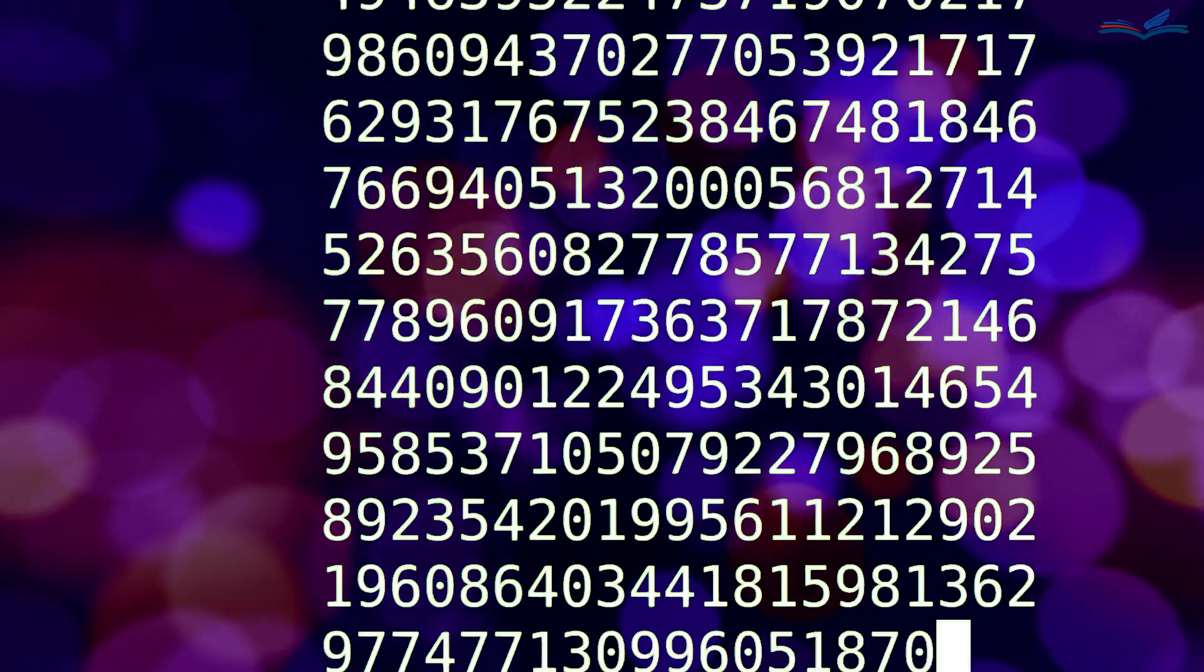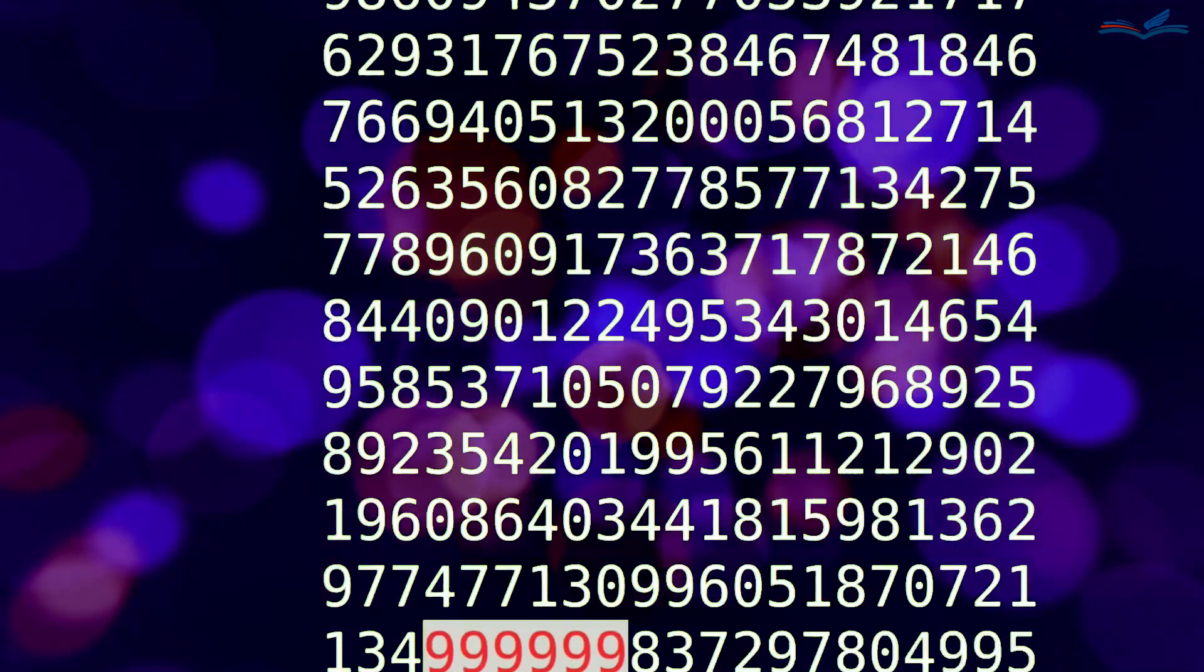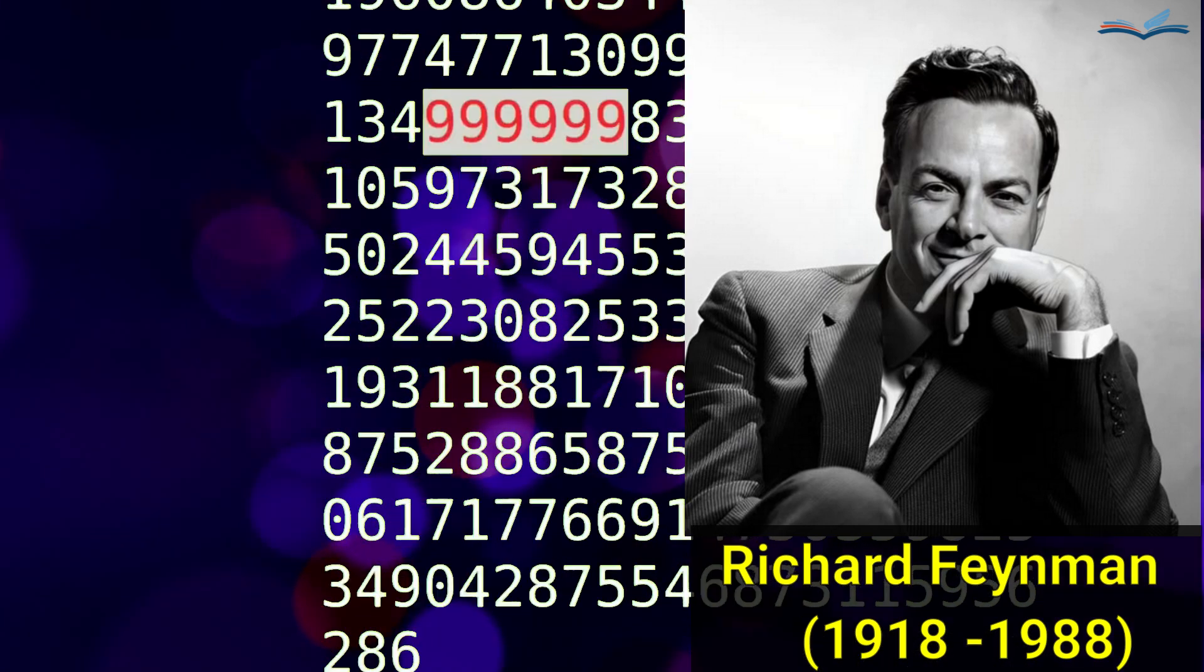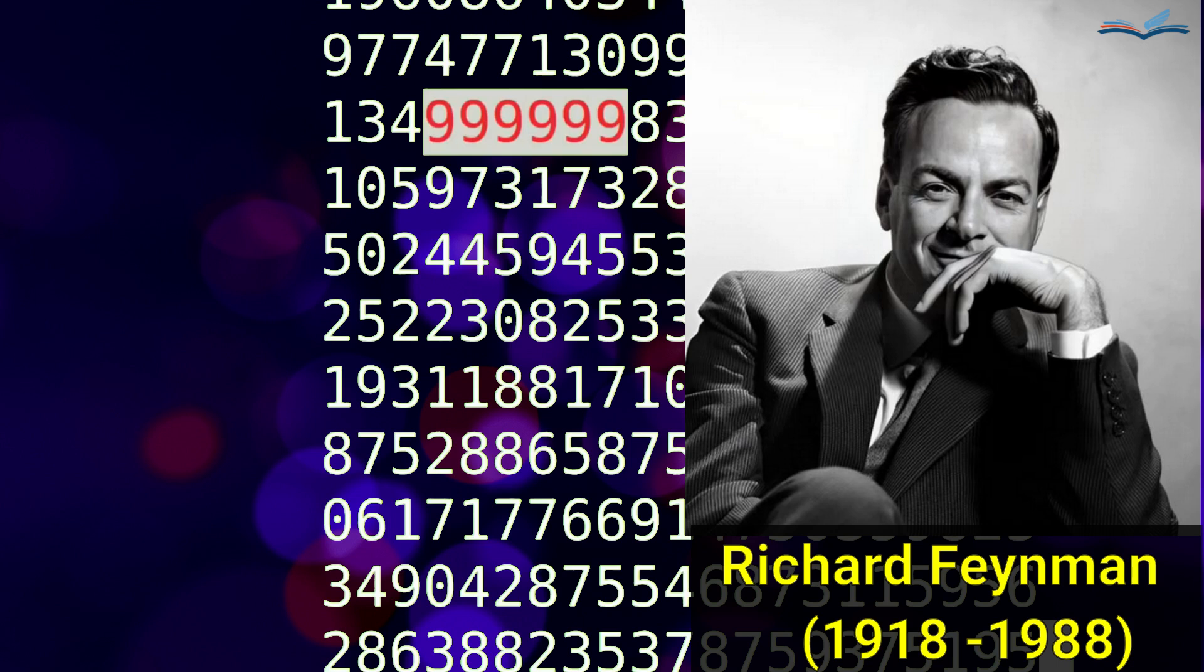This phenomenon is sometimes called the Feynman point, named after the famous American physicist Richard Feynman. Isn't it true that an infinite sequence of random digits contains every possible number, including your birthdate? True.